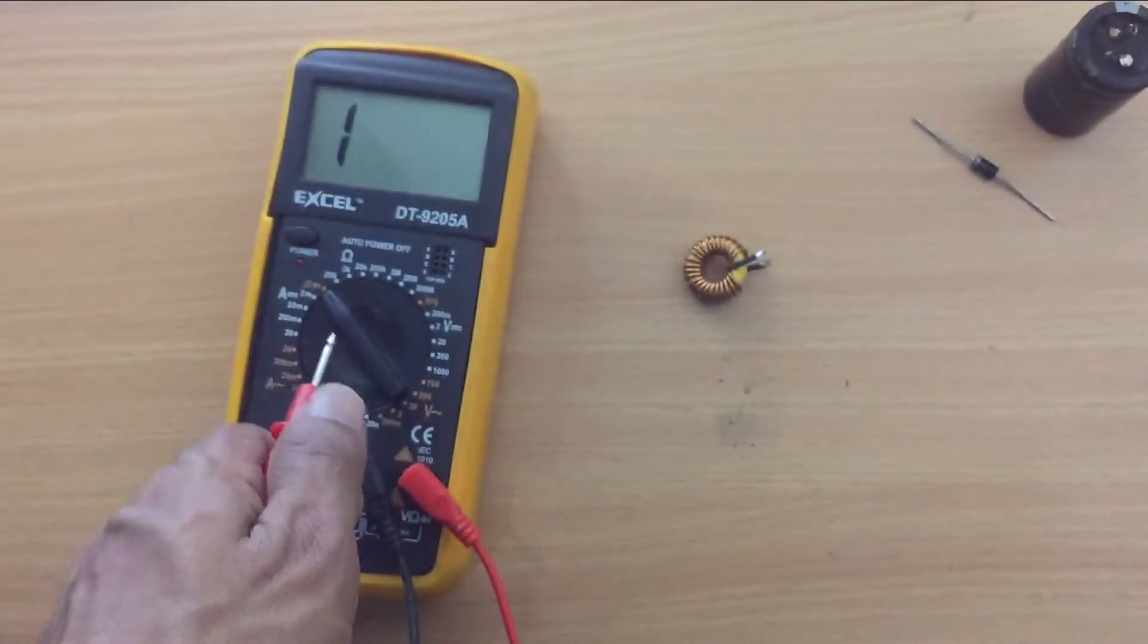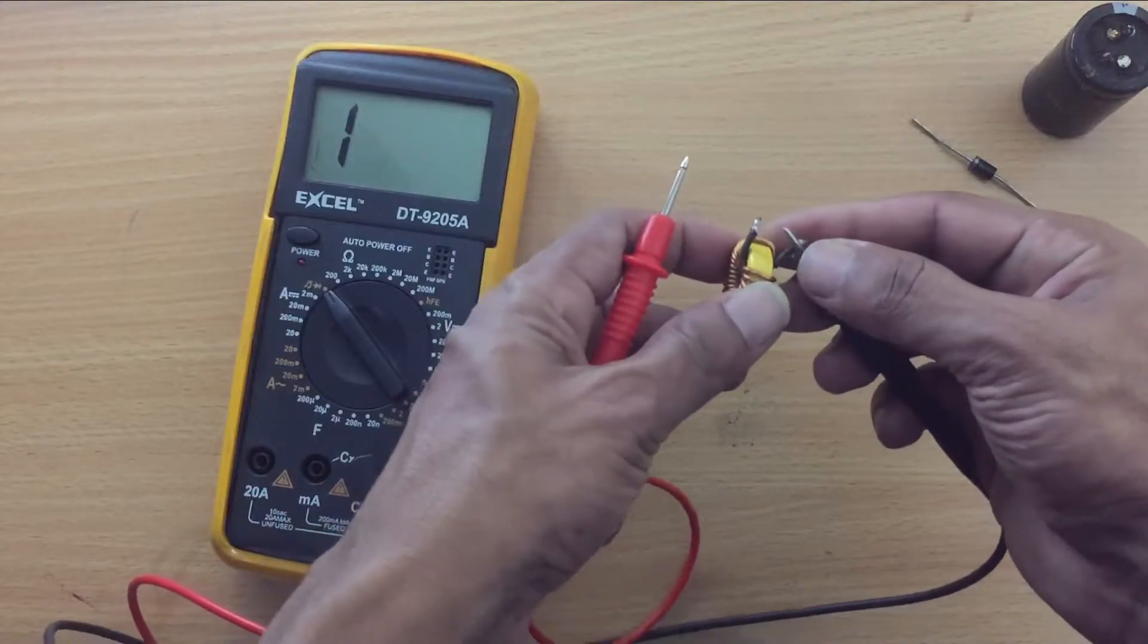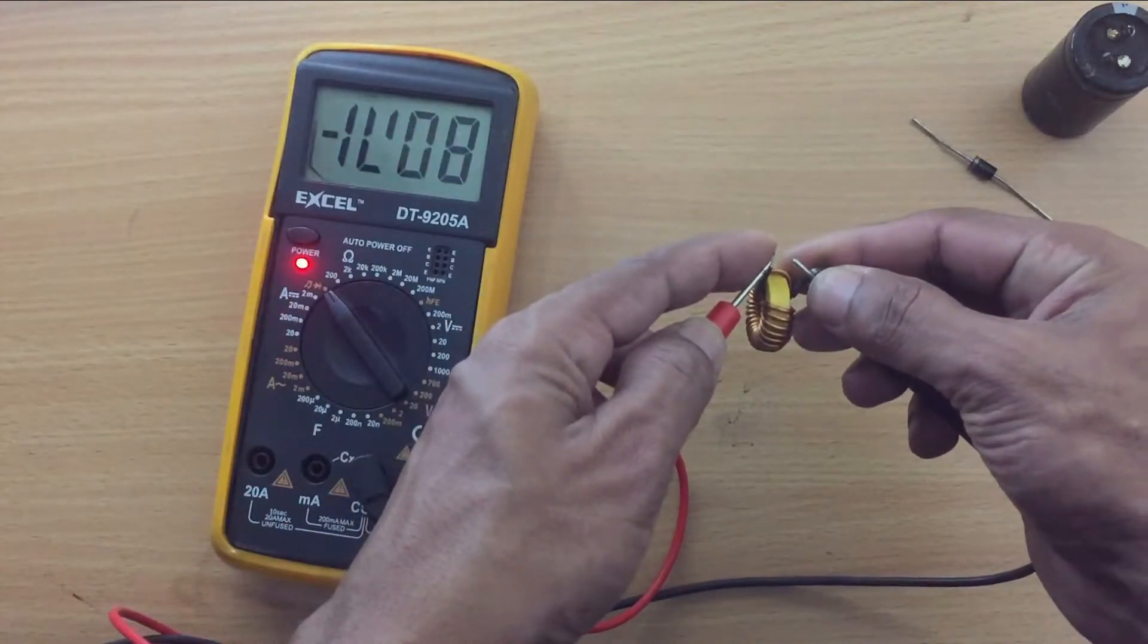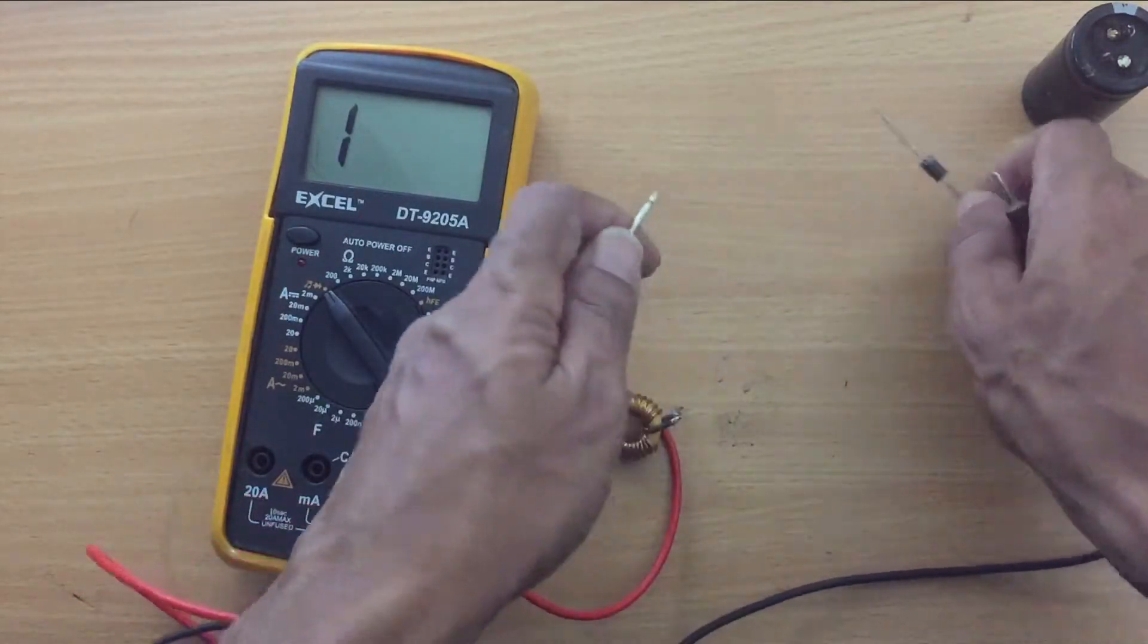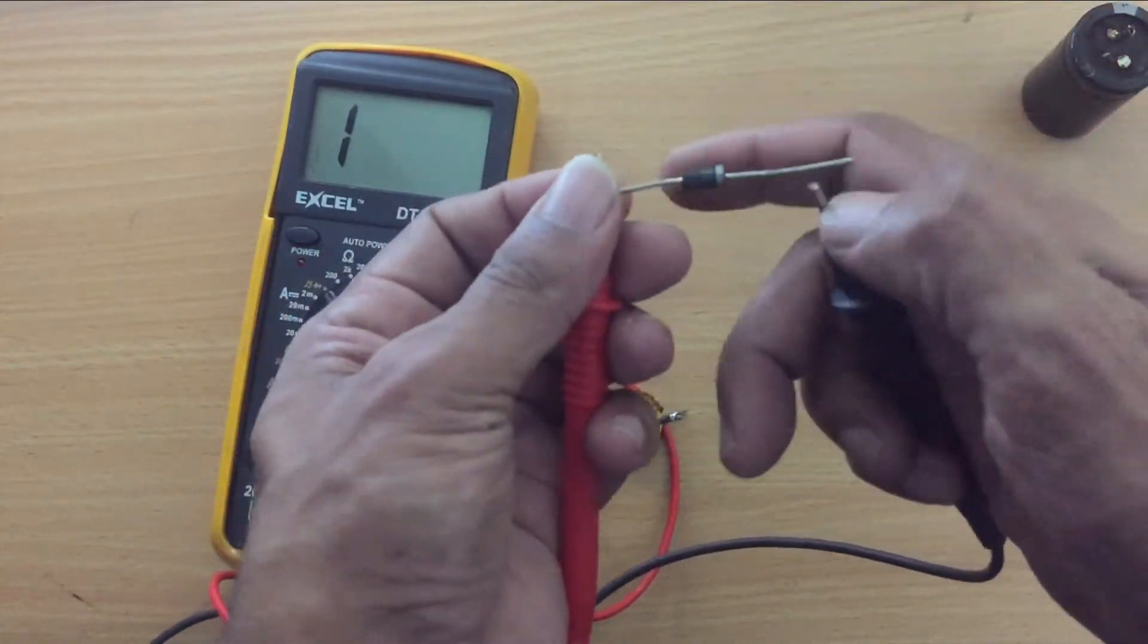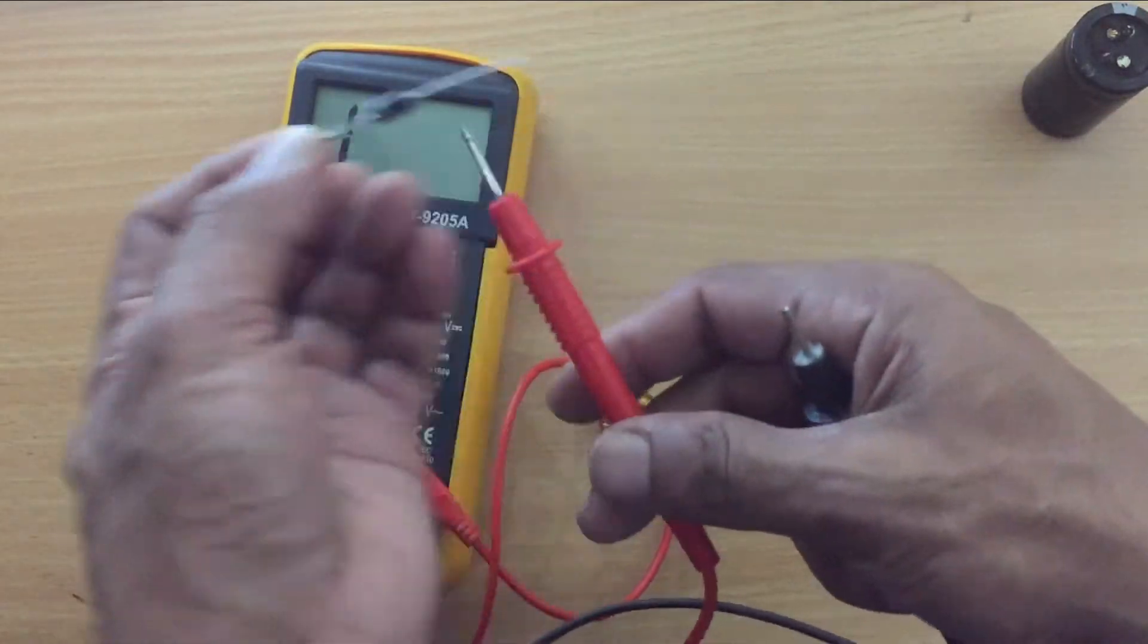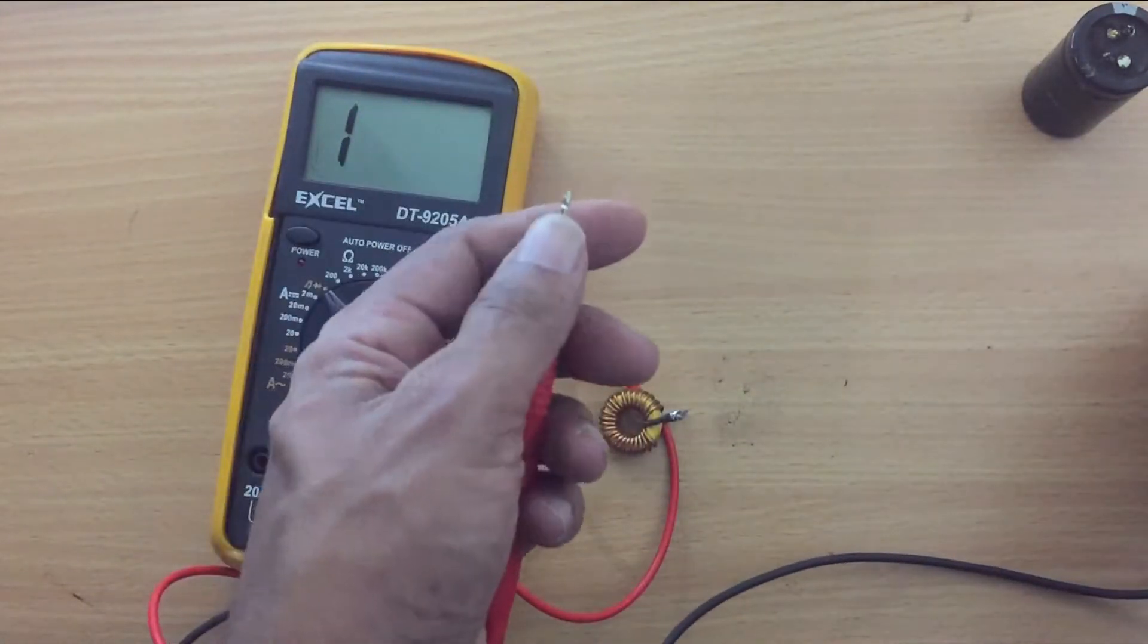Since this is a practical project, you must check the parts before assembling. You can check coils and these diodes using continuity tester of the multimeter. The coil is working well. But I think this diode is not functioning properly. Because the reading of multimeter should not be the same for both sides of the diode.